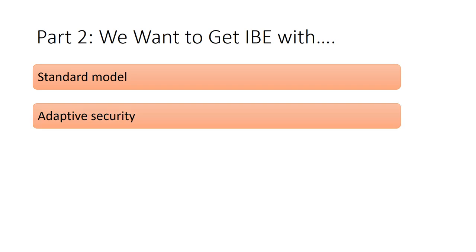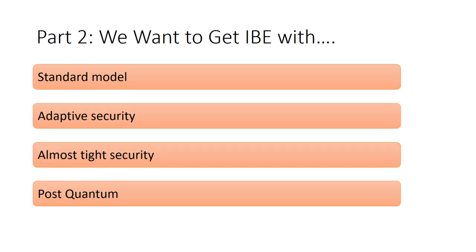Up until now, we have finished the presentation on PRF. Next, we focus on part 2, get IBE with standard model, adaptive security, almost tight security, post-quantum, and polynomial modulus.